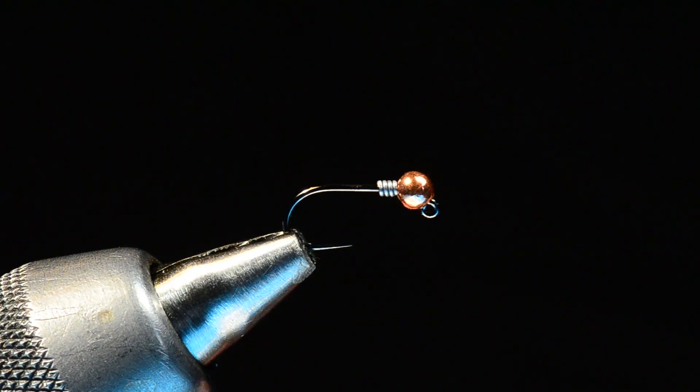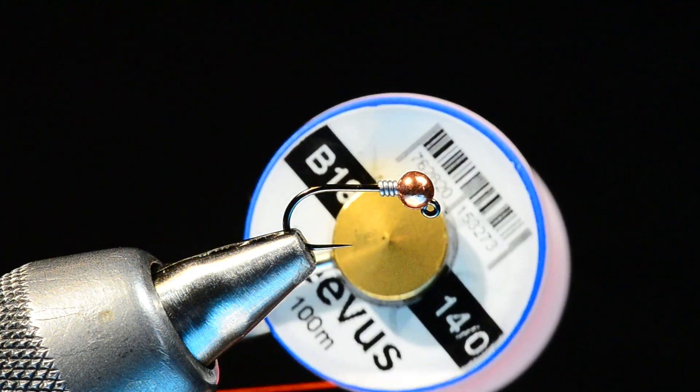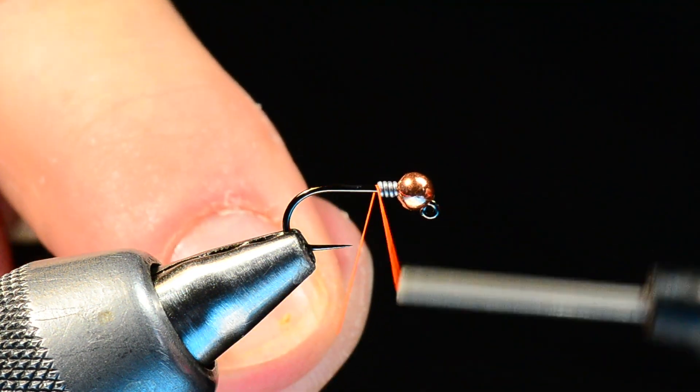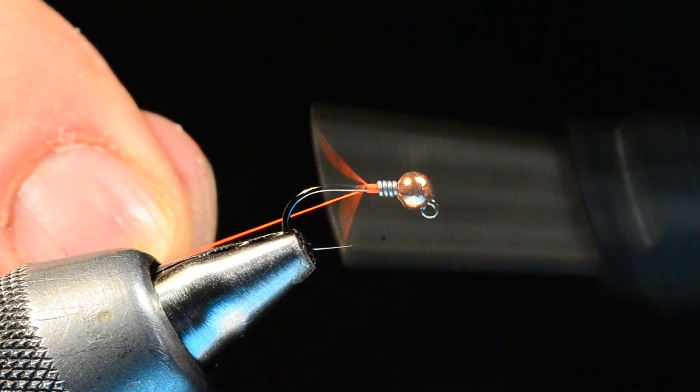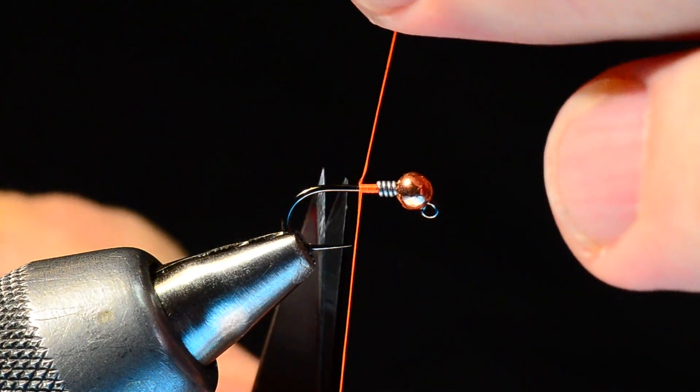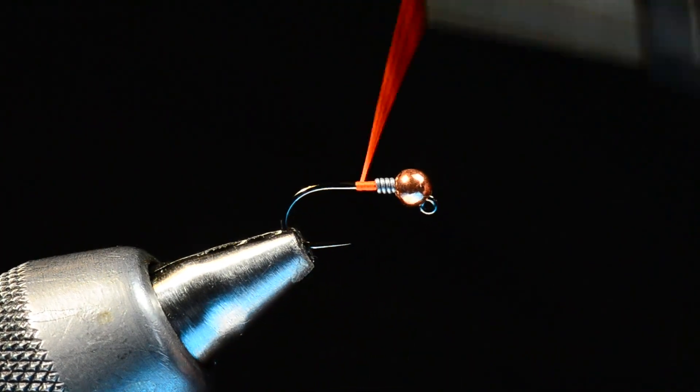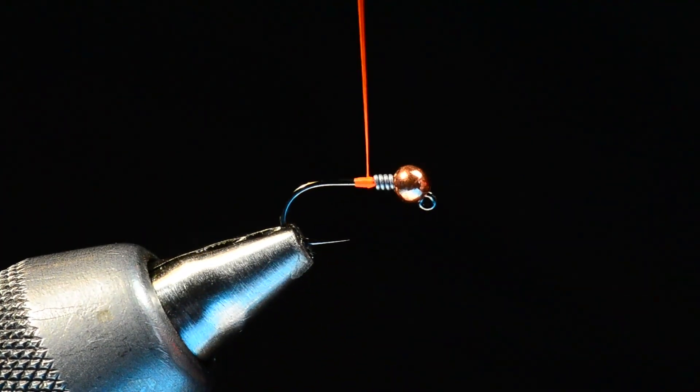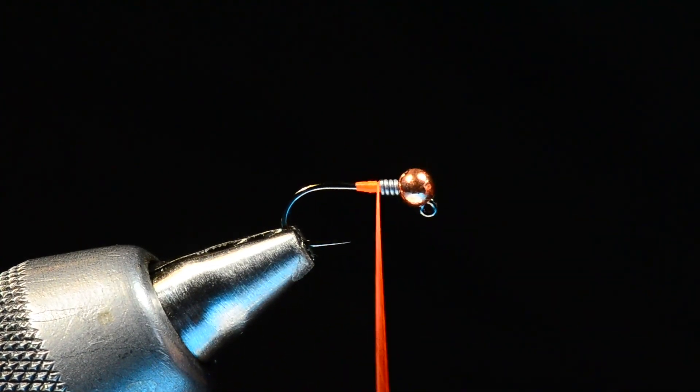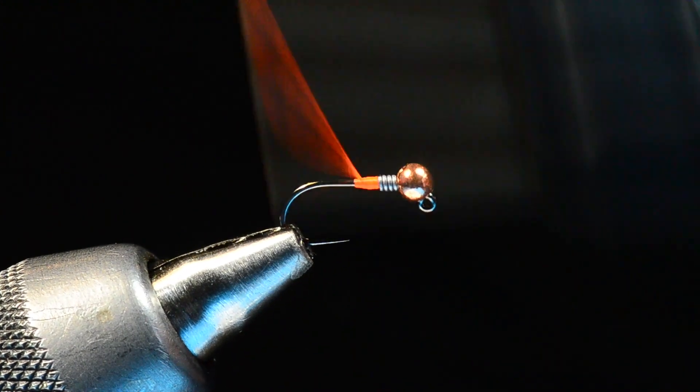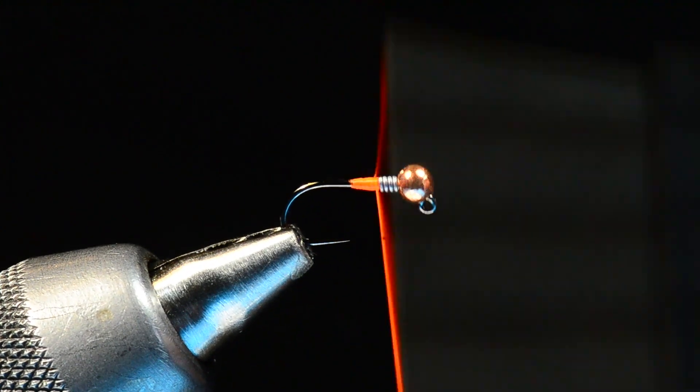I'm going to come in with some Fire Orange 14 Ought Veevus thread. I'm going to start this just behind that lead and get a little short jam knot on there. Then I'm going to build a taper going from the bare hook up to the lead. This will help jam the lead up against the bead and keep it from moving around.